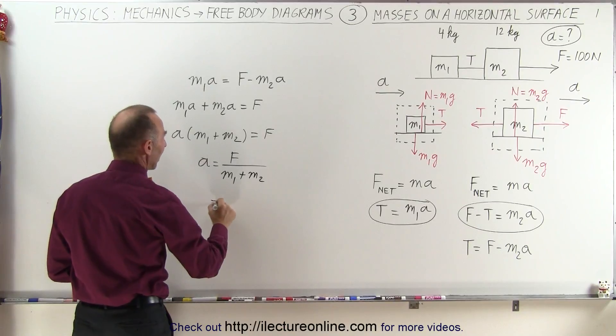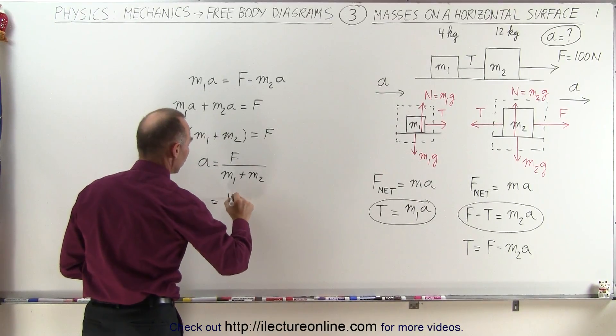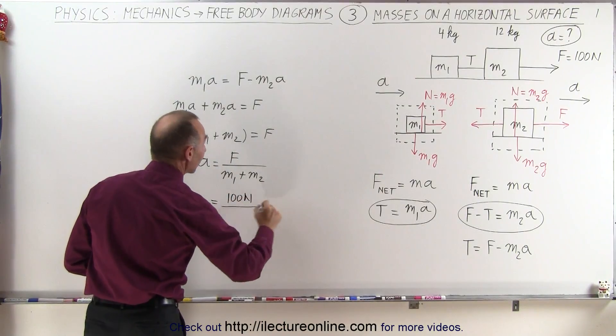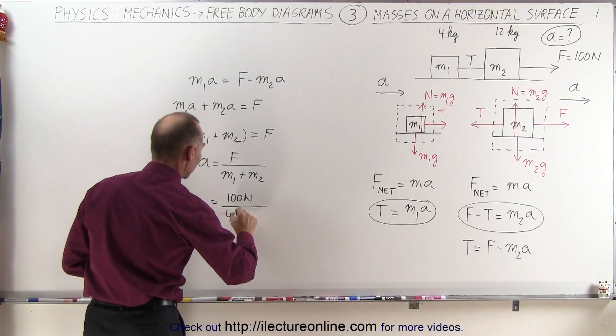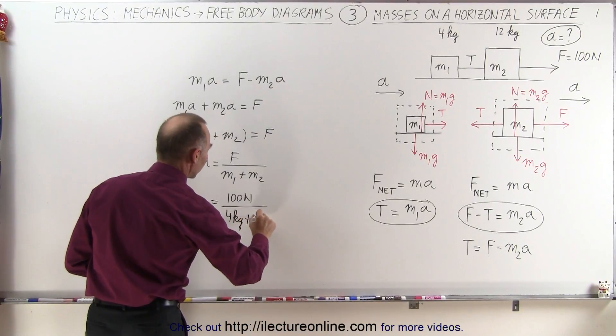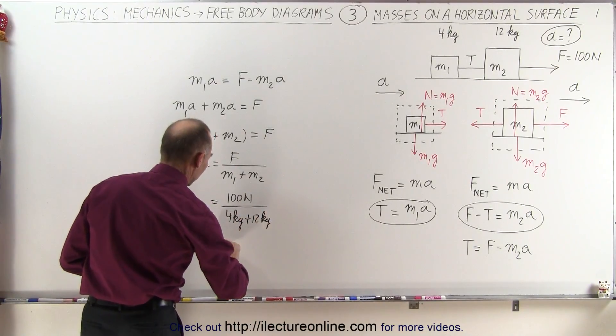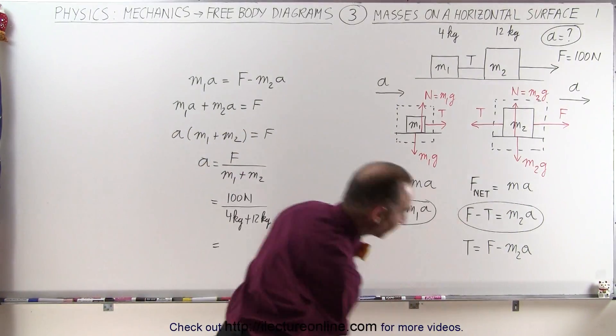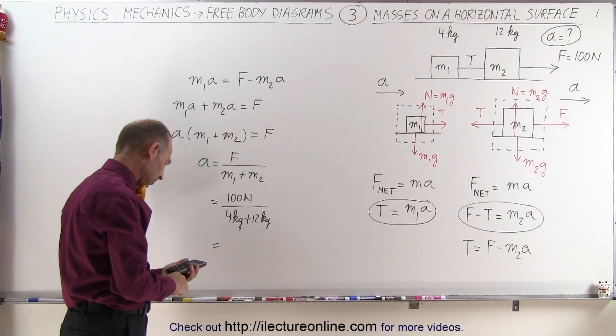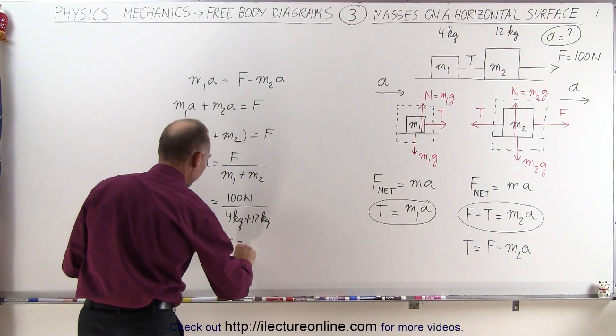If we now plug in the values, we have 100 Newton force, and we have masses adding up to 4 kilograms plus 12 kilograms, and so the acceleration will be 6.25 meters per second squared.